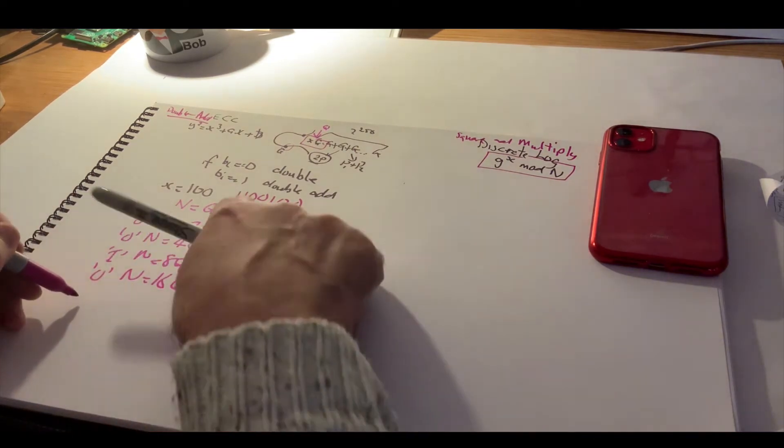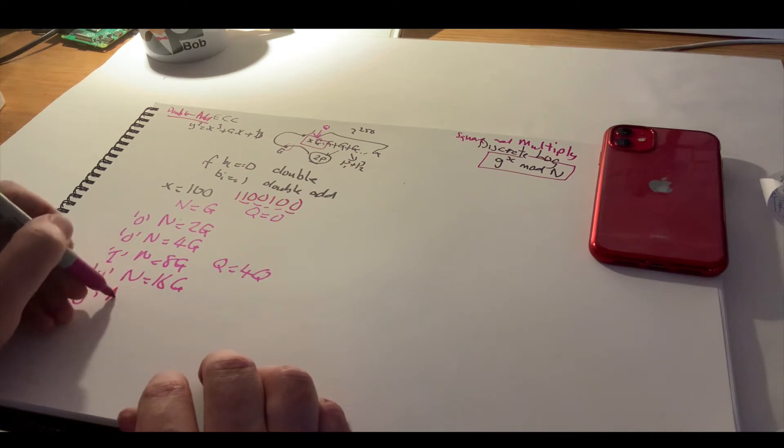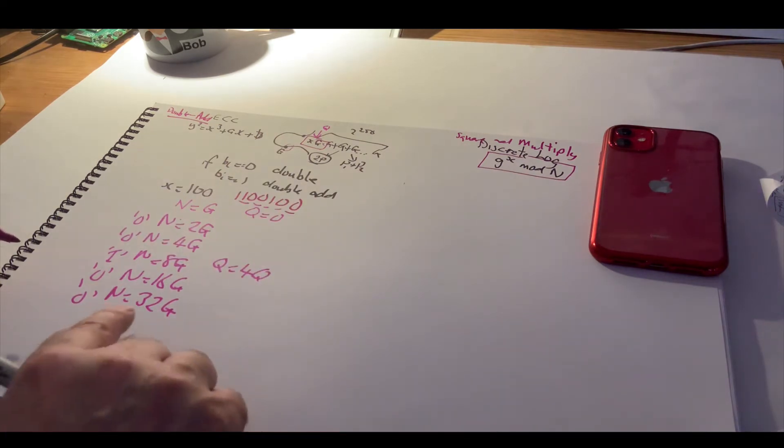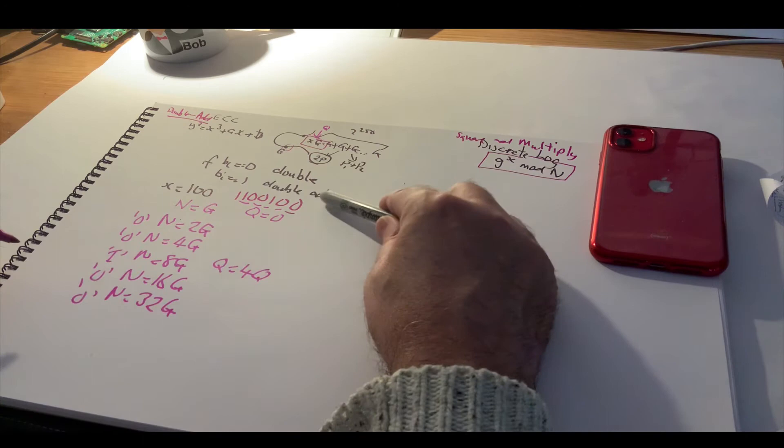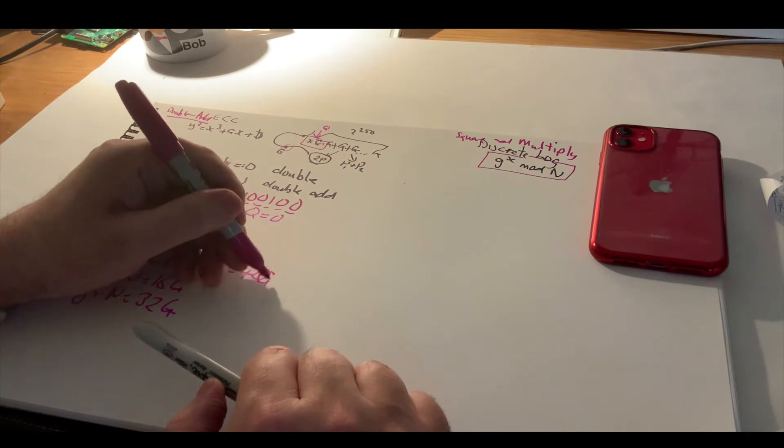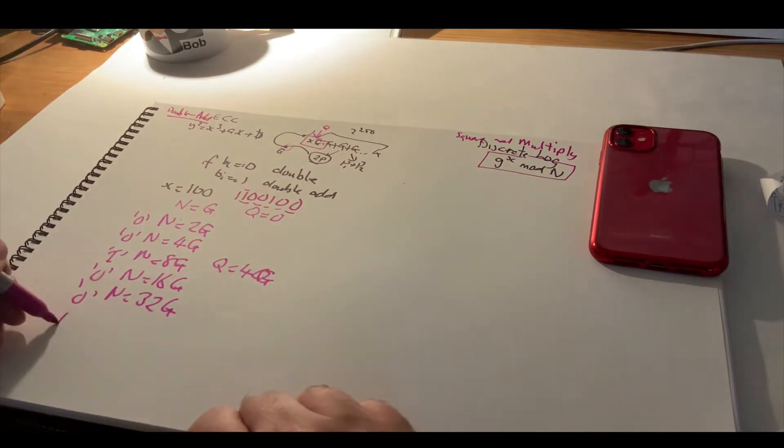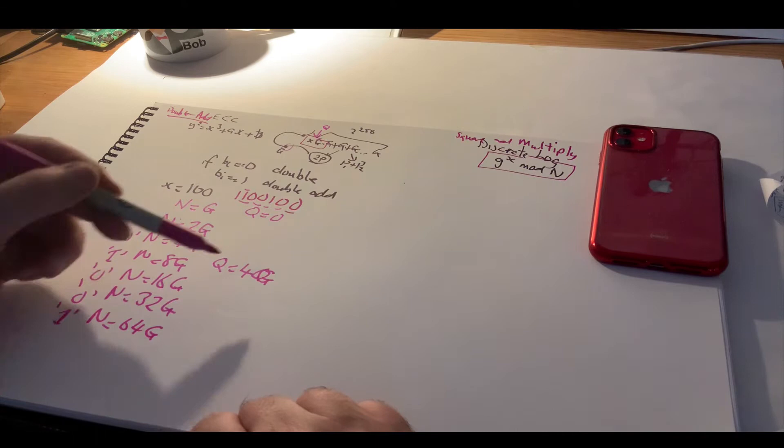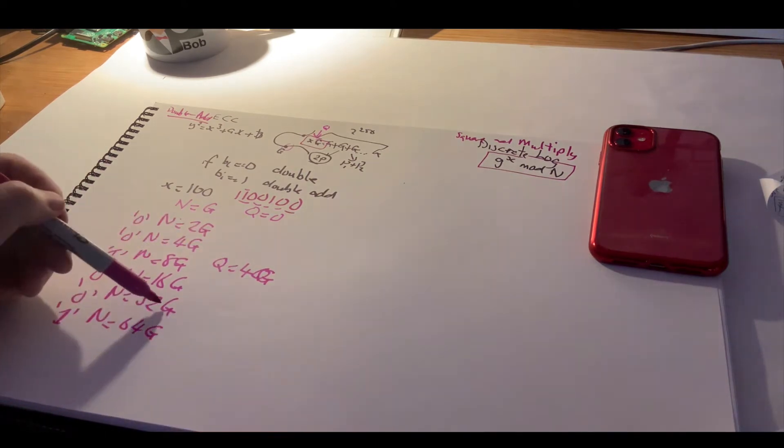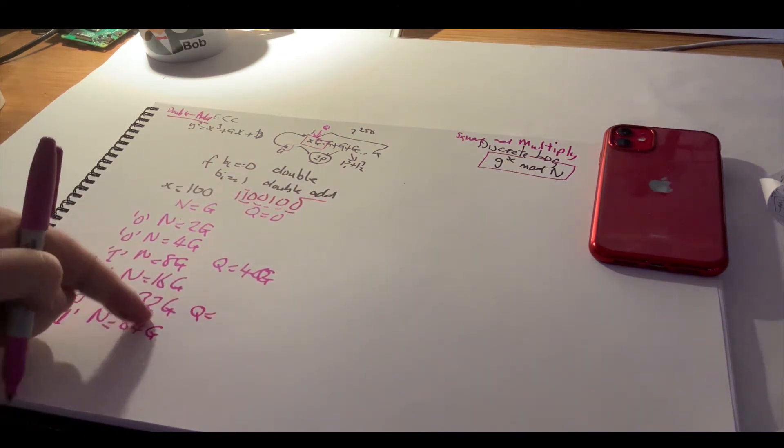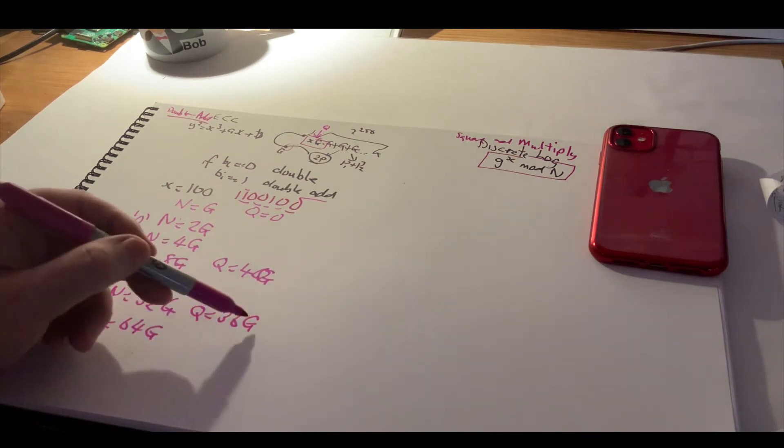Next, we have a zero, so we'll double and that just stays the same. Next, we have a zero, so we'll double again and we're up to 32g, g plus g plus g 32 times. And we're not doing our point addition here. So we're still at 4g. Now we have a one. So now n is 64. And what we'll do is that we'll add 4 and the 32 together for our point addition. So q is now equal to 36g.